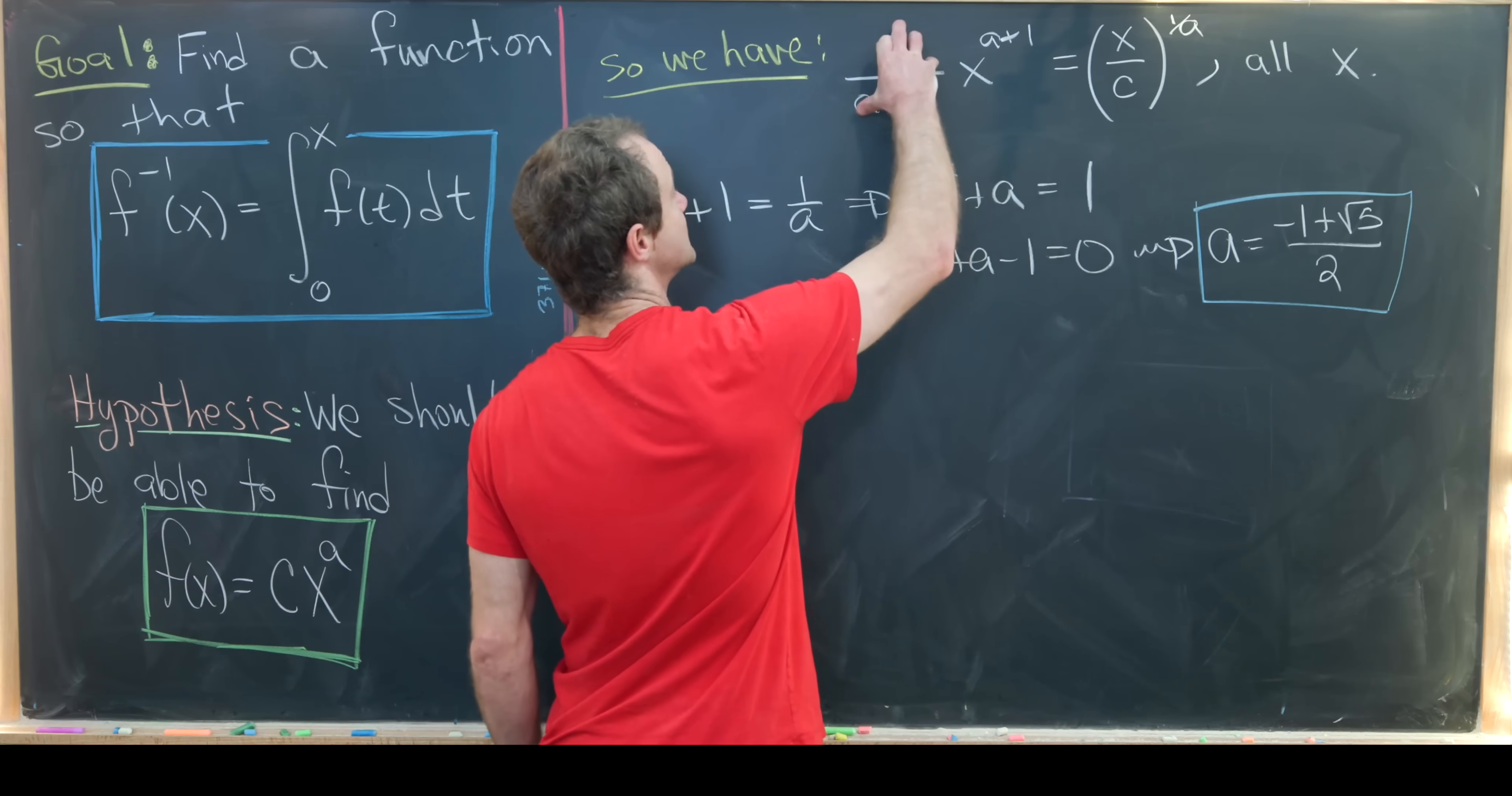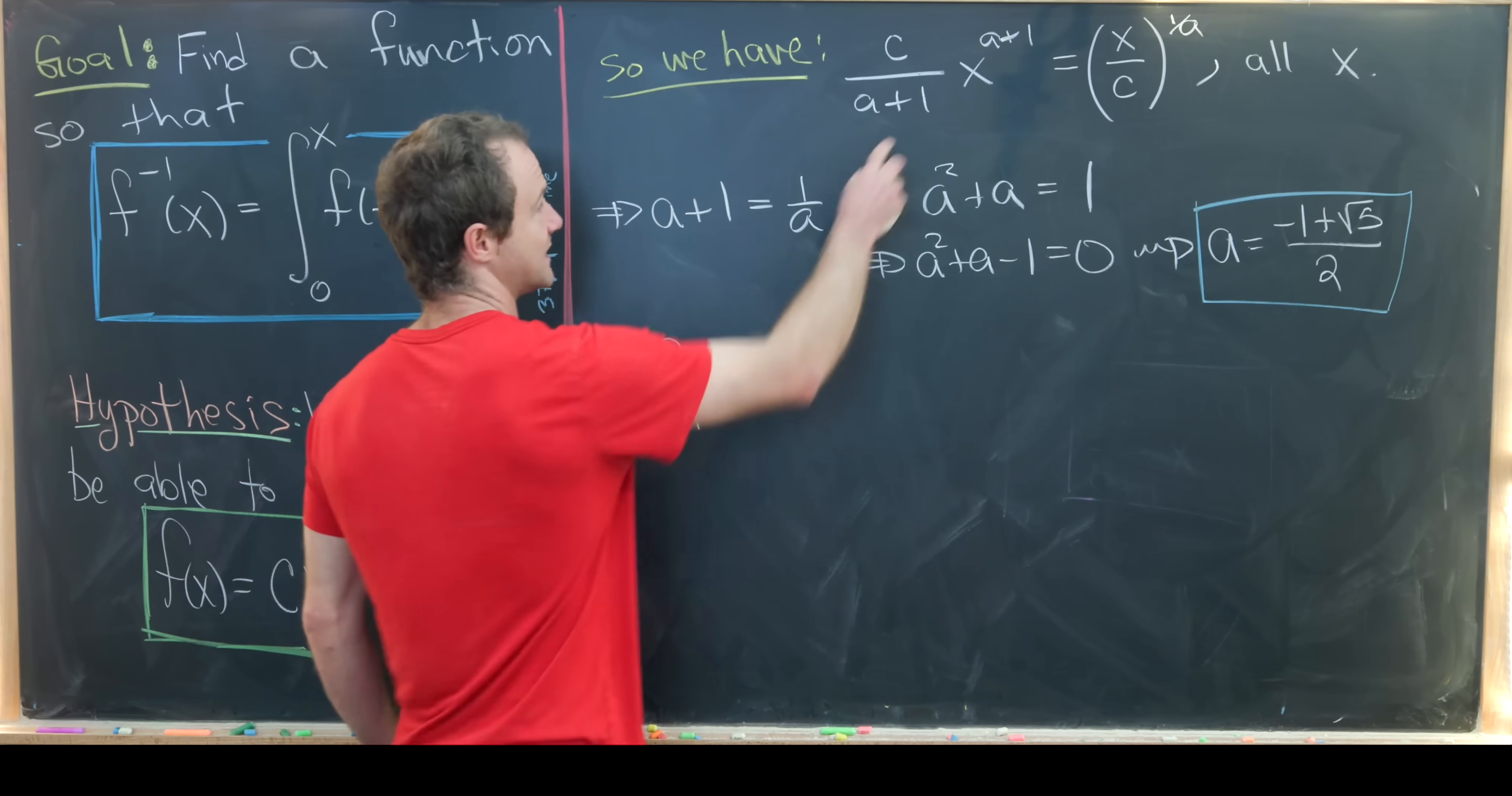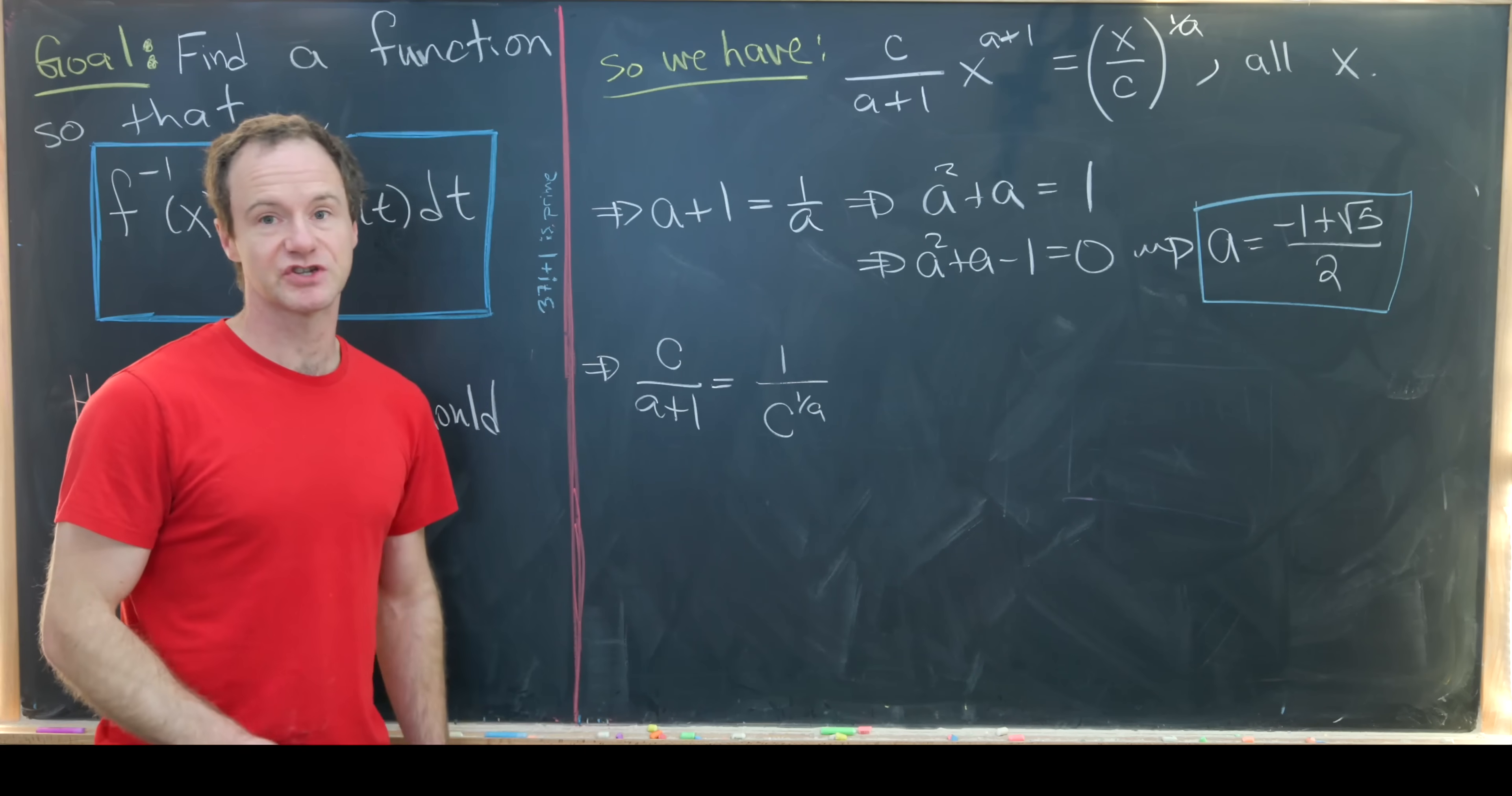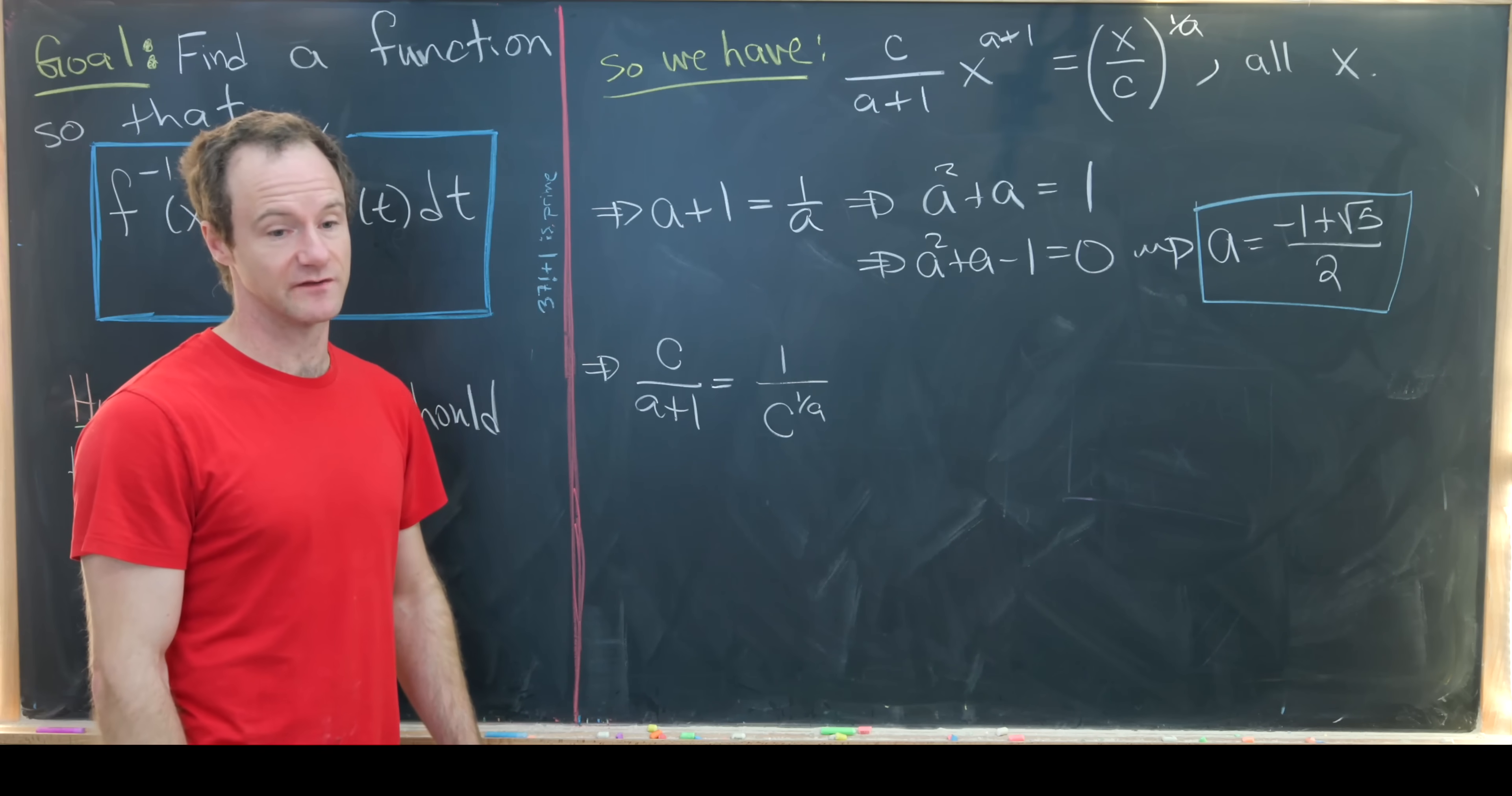Now we've got our value for a. We can impose the condition that the coefficients of x to this power on either side of the equation need to be the same. In other words, we have c over (a+1)—the coefficient on the left hand side—must equal 1 over c to the 1 over a, which is the coefficient on the right hand side. Since a is a bit complicated, maybe we should leave a in there and solve c in terms of a.